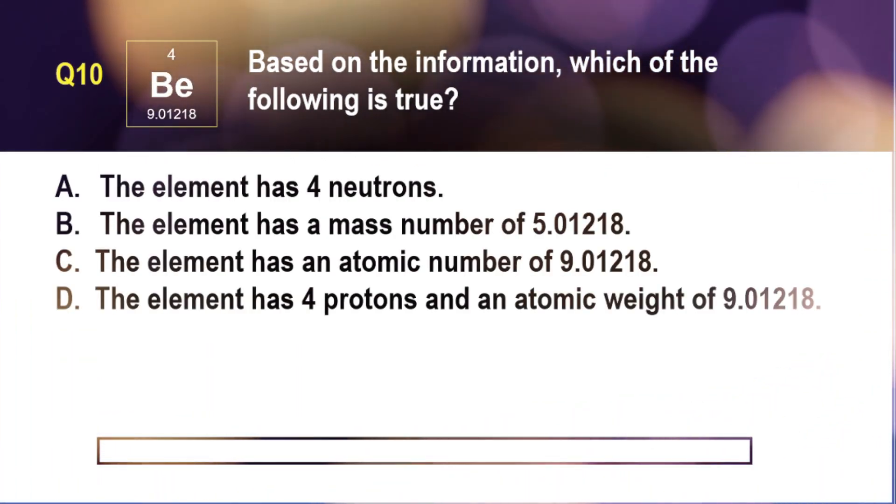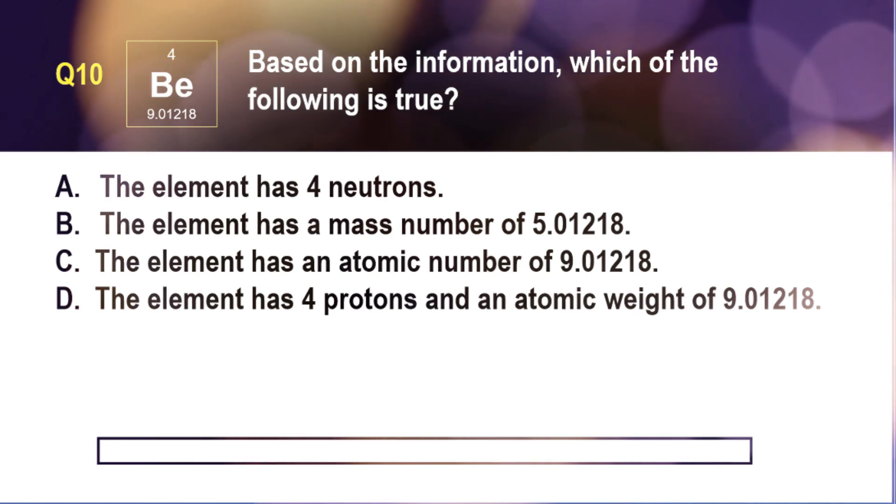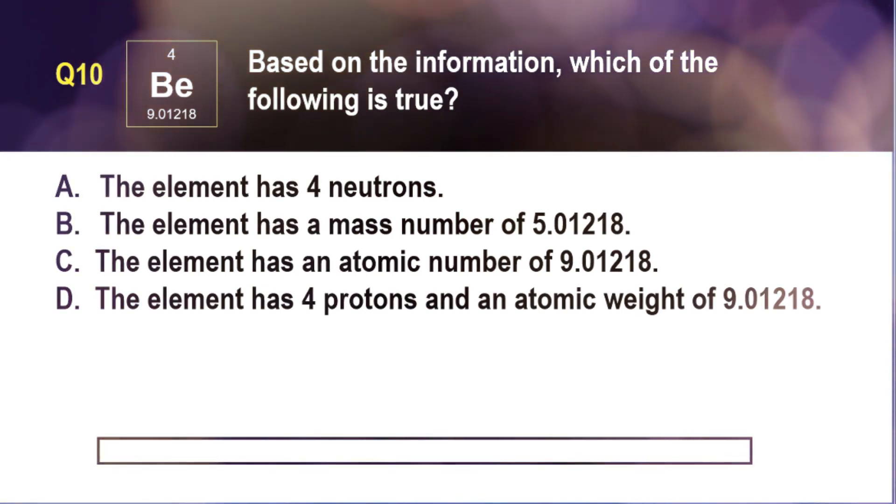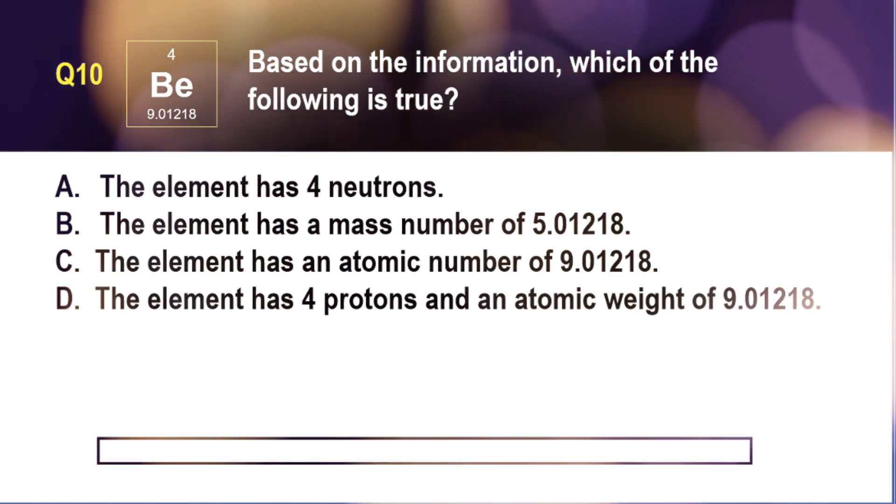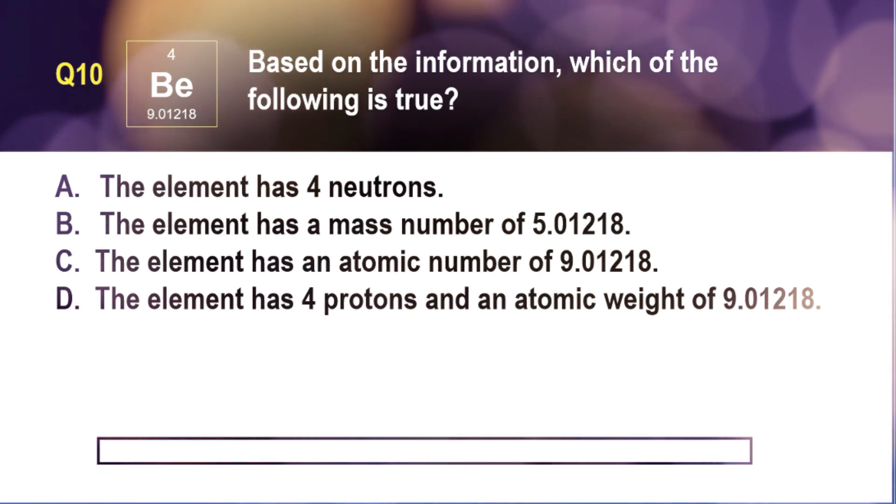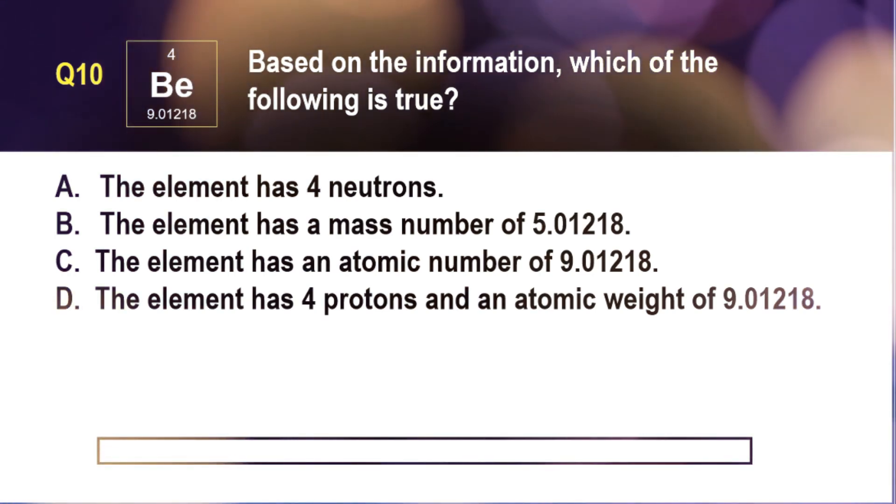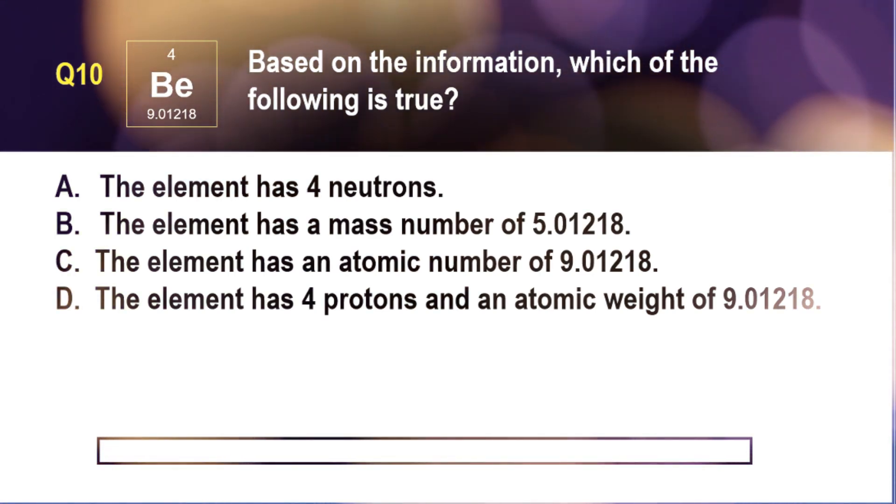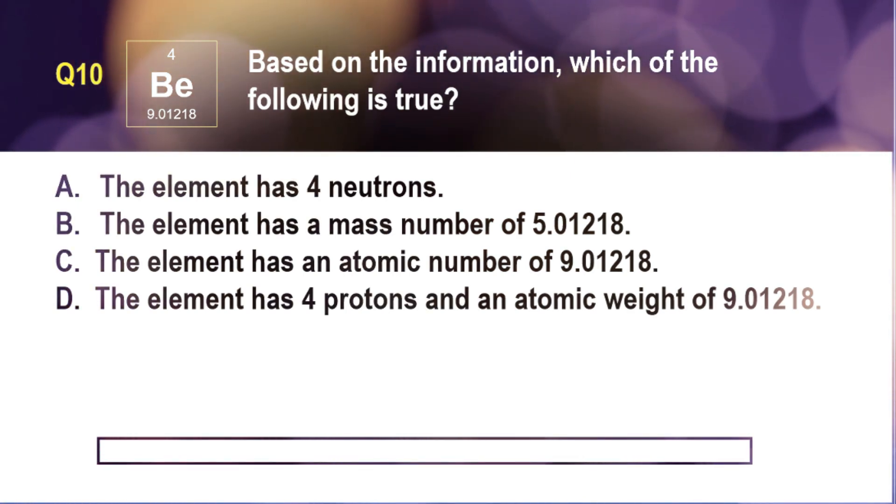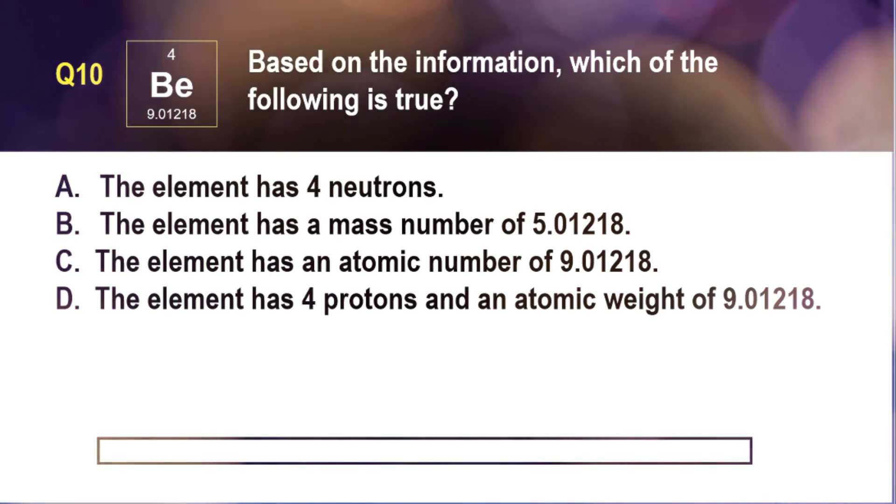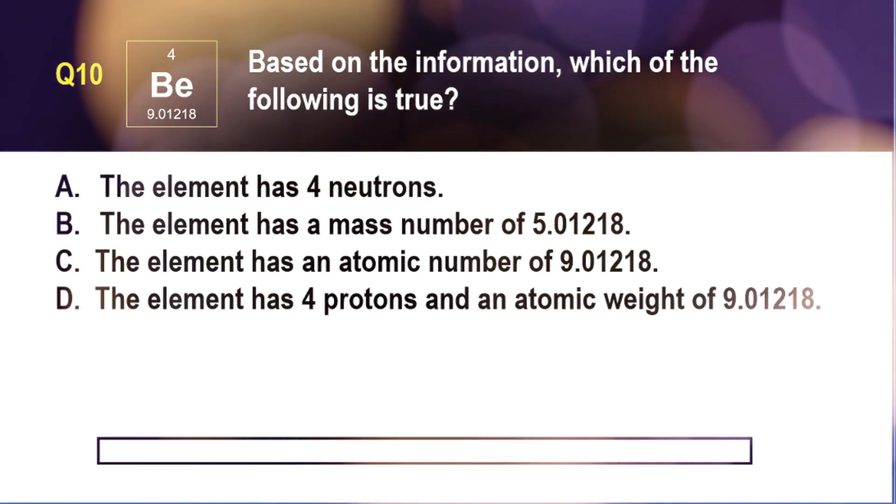Question number 10. Based on the information, which of the following is true? A. The element has four neutrons. B. The element has a mass number of 5.01218. C. The element has an atomic number of 9.01218. And D. The element has four protons and an atomic weight of 9.01218.